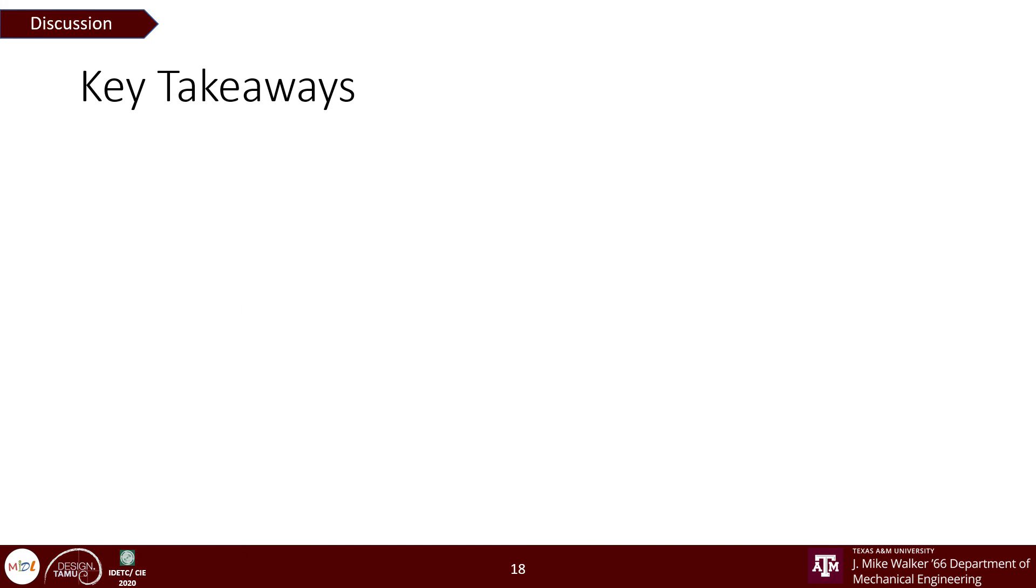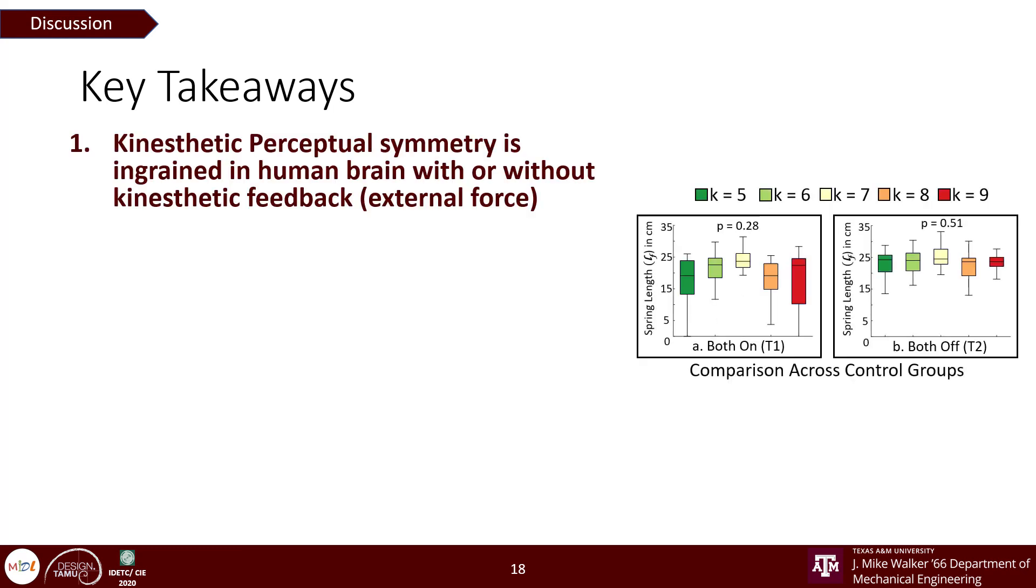Our objective in this work was to quantify kinesthetic perceptual symmetry in bimanual actions and here are some key takeaways from our work. We observed that participants maintain symmetry in both absence and presence of force feedback, which can be concluded to say that in addition to other senses, kinesthetic perceptual symmetry is also ingrained in human brain with or without kinesthetic feedback. While this is true, we observed that it was relatively easy to identify asymmetry in conditions where kinesthetic feedback was applied to either hands and for average forces as low as 1 N to 1.6 N.